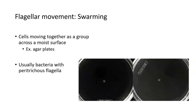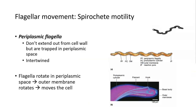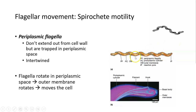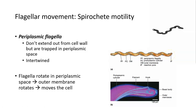Both swarming and swimming are dependent on the presence of flagella on these bacteria. One other type of flagellar movement is specific to bacteria called spirochetes. Spirochetes are spiral-shaped bacteria that have flagella which don't stick out into the environment but are trapped in the periplasmic space between the cell membrane and the outer membrane. Because those flagella are trapped along the length of the cell, when they spin they create a spiral movement of the bacterium rather than pushing it forward.